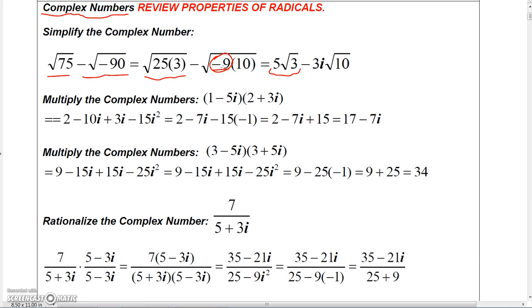And the square root of negative 9 is 3i, so I'm going to have minus 3i times the square root of 10, and that's how you simplify a complex number.